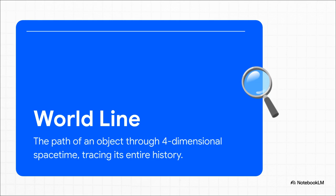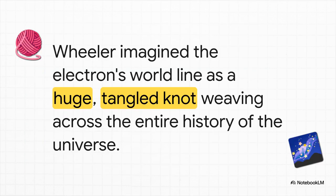Wheeler decided to apply this exact same concept to his one, single, cosmic electron. But instead of a simple, straight line, Wheeler imagines something way grander. He pictured an immense, tangled-up knot of a worldline, weaving back and forth across the entire span of time, from the Big Bang all the way to the very end of the universe. Just one, continuous, unbelievably complicated thread.